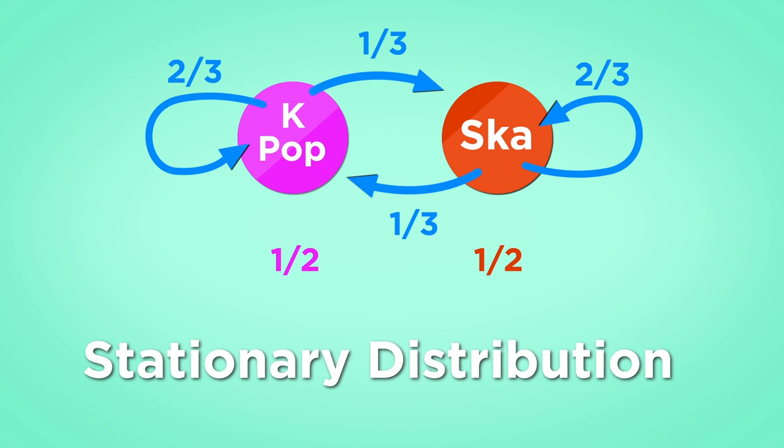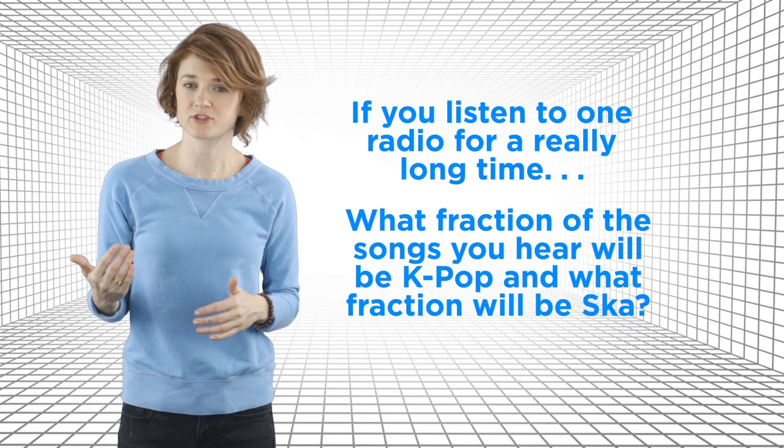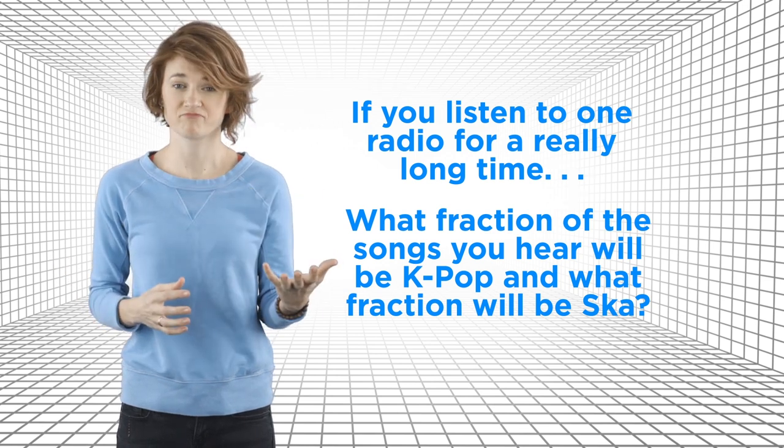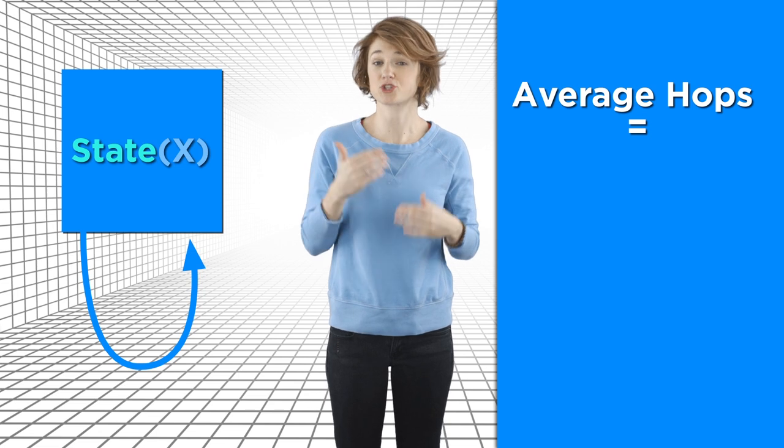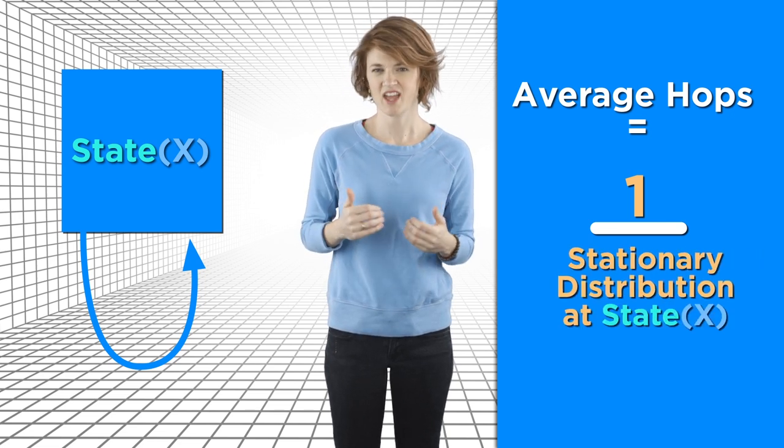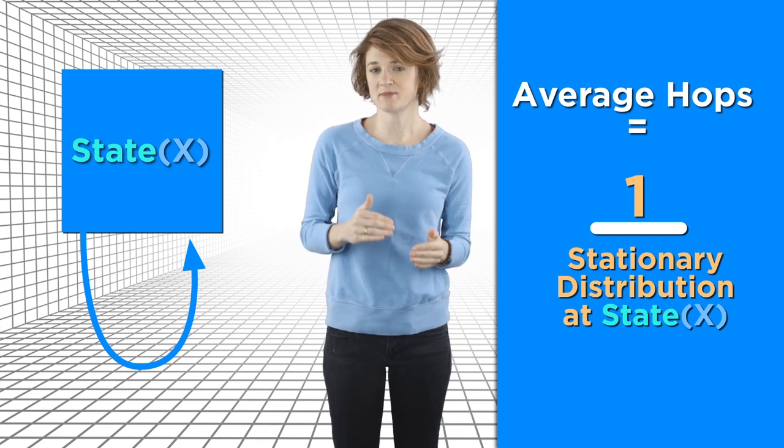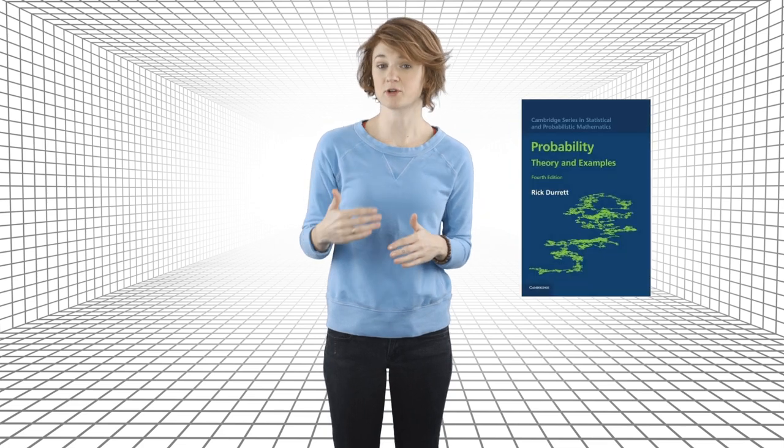A slightly more intuitive way to think about it is the following. If you listen to one radio for a really long time, what fraction of songs you hear will be K-pop and what fraction will be ska? About half and half. Here's a theorem about stationary distributions. Pick a state in the Markov chain and give it the generic name state x. Starting from state x, the average number of hops it will take to return to state x is 1 divided by the value of the stationary distribution at state x. This kind of makes sense. The bigger the stationary distribution, the more popular the state is, and the less time it takes to return to it. For a formal proof, check out the resources in the description, including the textbook where I first saw this problem.